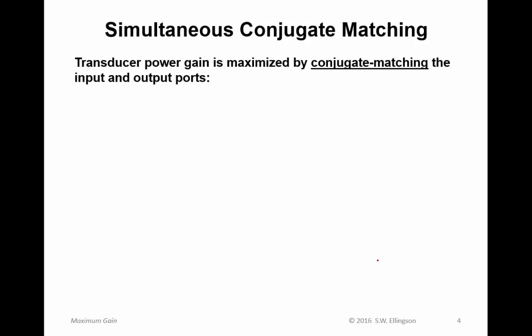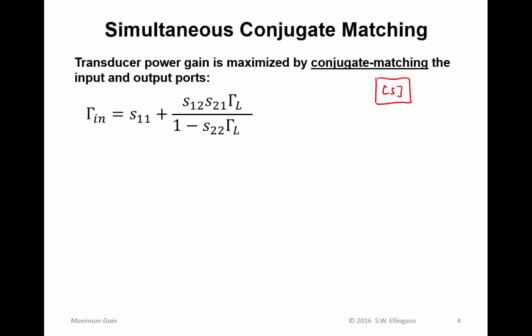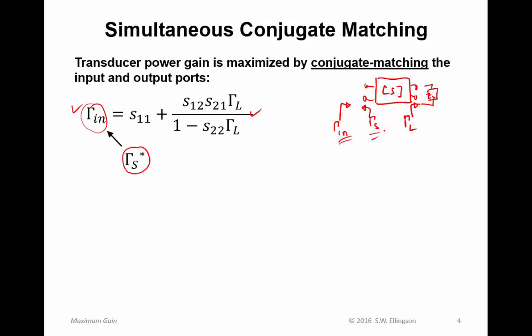Transducer power gain is maximized by conjugate matching the input and output ports. Here is the two-port represented by its S-parameters. It has an output port and an input port. There's a source reflection coefficient representing the source impedance, and a load reflection coefficient representing the load impedance. The embedded input reflection coefficient is given by a specific expression we discussed in a previous lecture. If we're looking into the two-port, the embedded input reflection coefficient is what we see when Z_L is actually attached to the output.